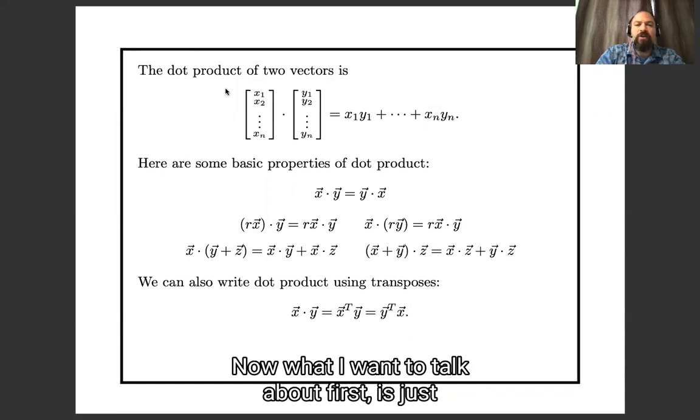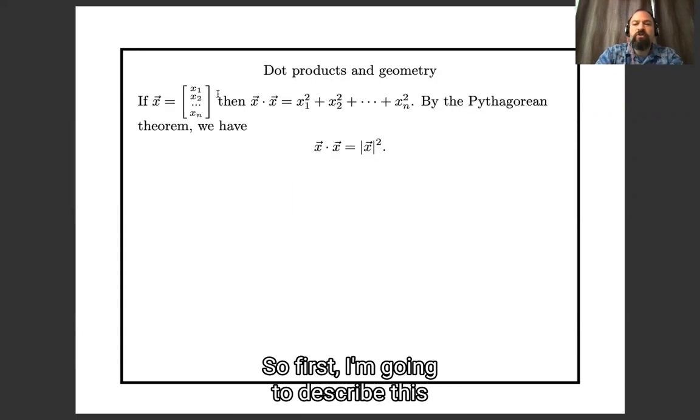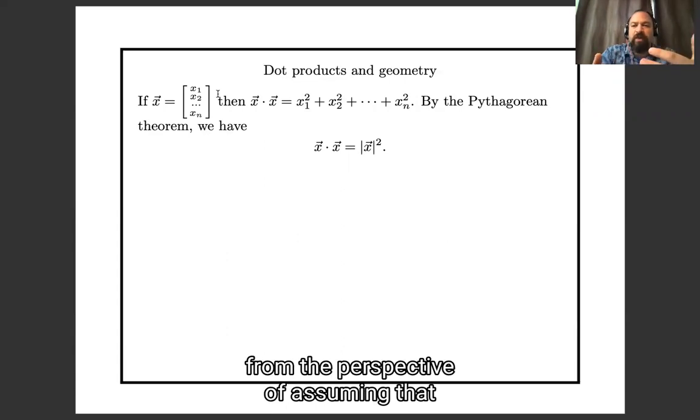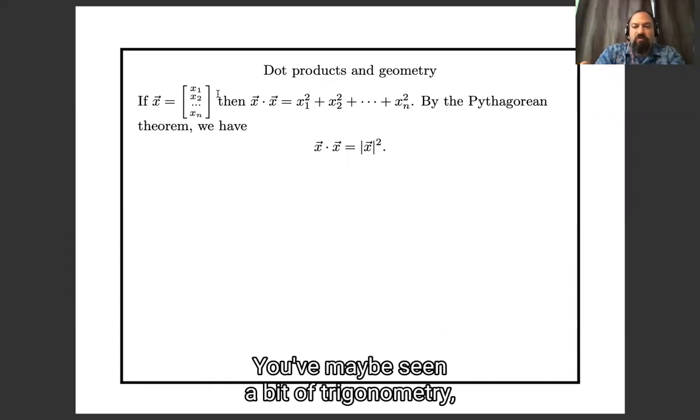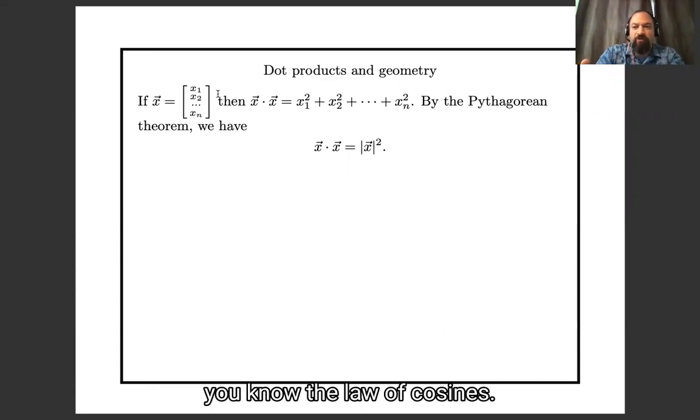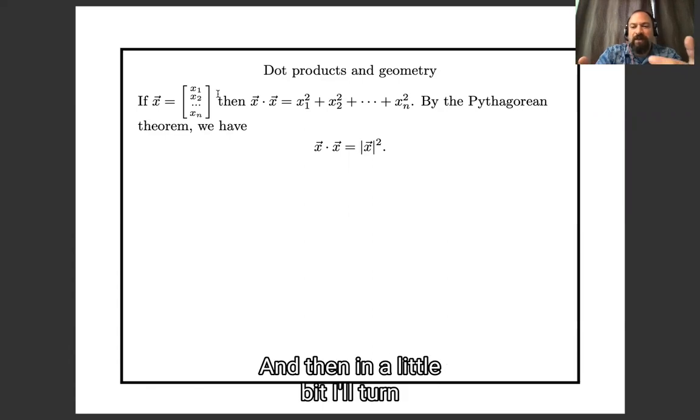Okay, and what I want to talk about first is just thinking about dot products in geometry. So first, I'm going to describe this from the perspective of assuming that you know a bit of geometry, that you know the Pythagorean theorem, you've maybe even seen a word of trigonometry, you know the law of cosines. I'm going to assume you're happy with all those ideas, and then in a little bit I'll turn the tables and say, what if you're not?